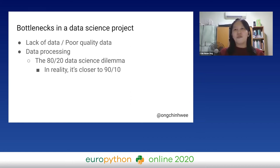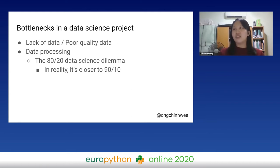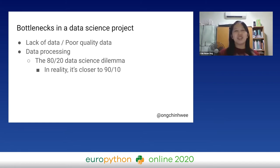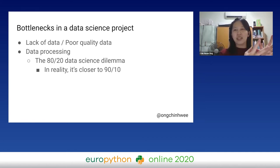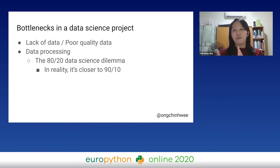Some examples are noisy images, noisy texts, or missing values — all of these require data processing. This leads to the very famous 80-20 data science dilemma: 80% of the time is actually spent acquiring and cleaning data, while only 20% of the time is spent developing models.